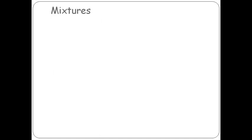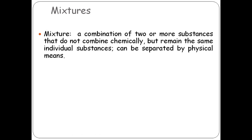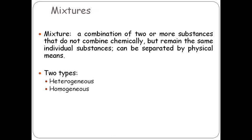Now let's talk about Mixtures. A mixture is a combination of two or more substances that do not combine chemically but remain the same individual substance, and which can be separated by a physical method. There are two types of mixtures: Heterogeneous Mixture and Homogeneous Mixture.